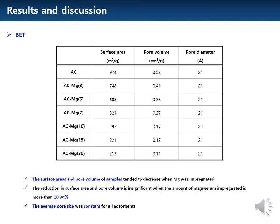As a result of the BET analysis, the surface areas and pore volume of samples tend to decrease when magnesium was impregnated. However, the reduction in surface area and pore volume is insignificant when the amount of magnesium impregnated is more than 10 weight percent. In addition, the average pore size was constant for all adsorbents.